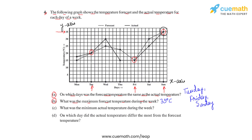Question C asks for the minimum actual temperature during the week. The actual temperature is represented by the solid line. The minimum point on the solid line, reading from the y-axis, gives us 15 degrees Celsius as the minimum actual temperature during the week.